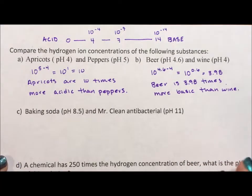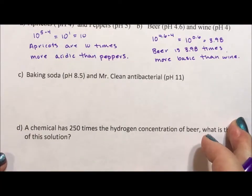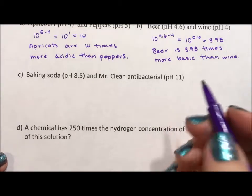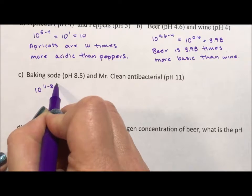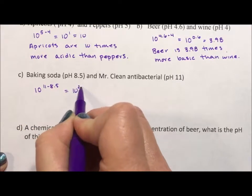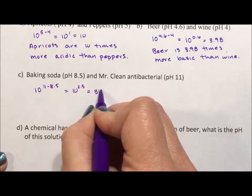Next we are going to compare baking soda and Mr. Clean antibacterial. So we have 10 to the 11 minus 8.5 which is 10 to the 2.5 which comes out to 316.2.